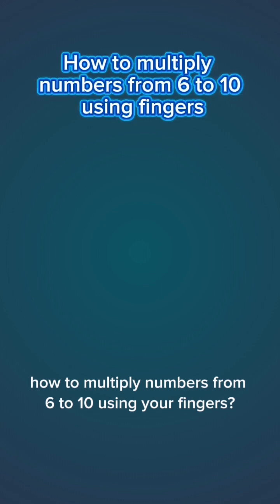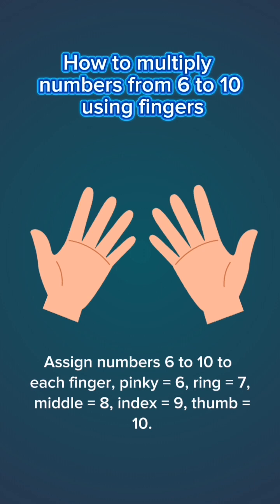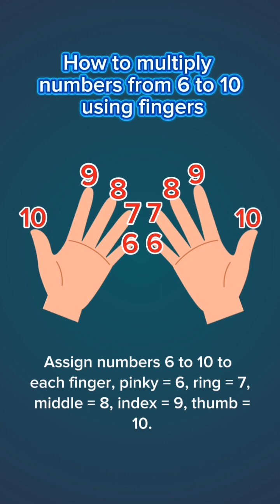How to multiply numbers from 6 to 10 using your fingers. Here's the trick: assign numbers 6 to 10 to each finger. Pinky equals 6, ring equals 7, middle equals 8, index equals 9, thumb equals 10.